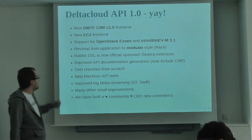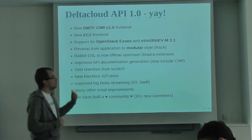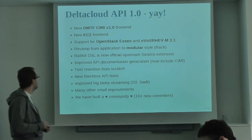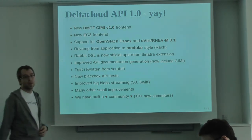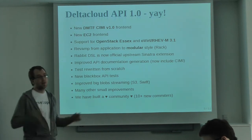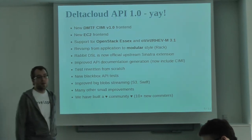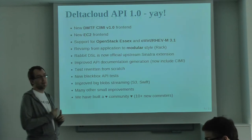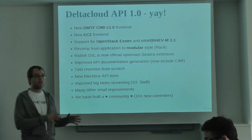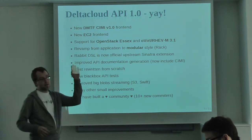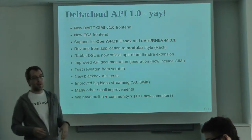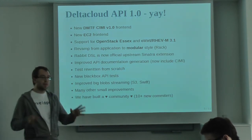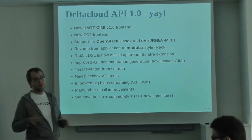We improved the API documentation generators — they now include CIMI so you can browse the CIMI documentation through Delta Cloud as well. We completed written tests and are now using tests consistently with MiniTest for everything. We have two kinds of tests: black box and white box. With black box tests, you can point to any Delta Cloud API server, run the tests, and it will tell you if the server is Delta Cloud compatible. We also have white box unit tests for various drivers.